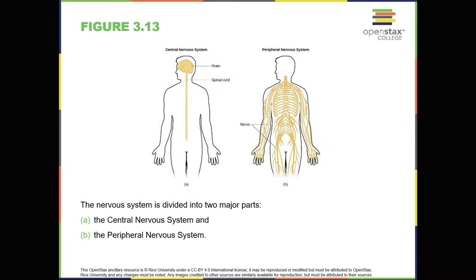And three, differentiate between the sympathetic and parasympathetic divisions of the autonomic nervous system. The nervous system can be divided into two major subdivisions: the central nervous system, or CNS, and the peripheral nervous system, PNS, both shown in figure 3.13. The central nervous system is comprised of the brain and the spinal cord. The peripheral nervous system connects the central nervous system to the rest of the body.